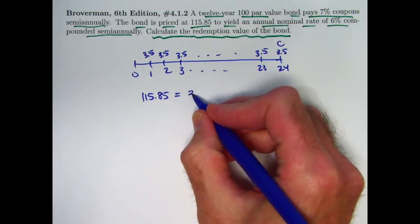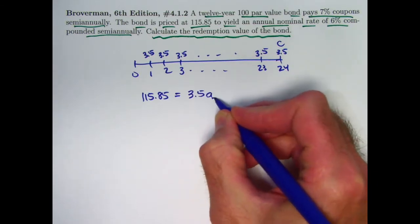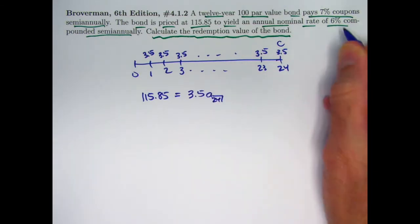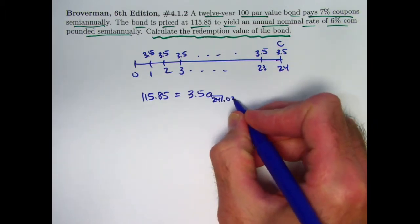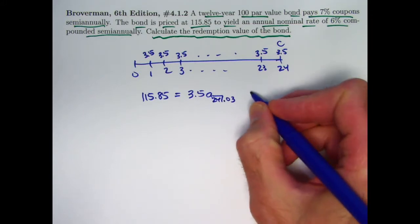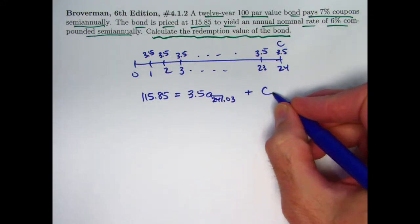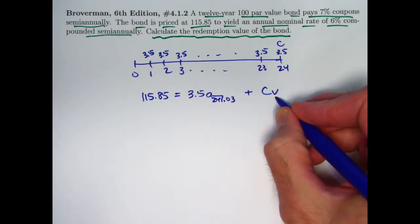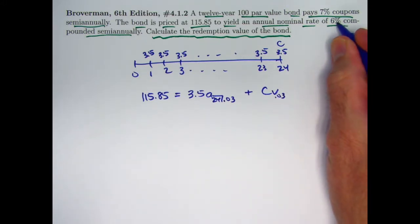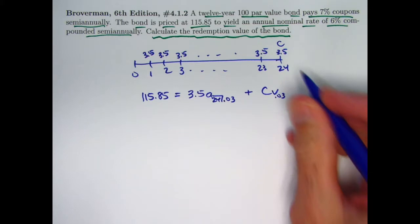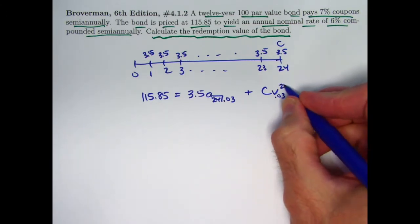So that present value will be 3.5 times A angle 24 at yield rate, 6% divided by 2, 3% is your semi-annual yield rate, 0.03, plus the unknown redemption value that's discounted back 24 periods, V sub 0.03. Again, 6 divided by 2 is 3%, raised to the 24th power.